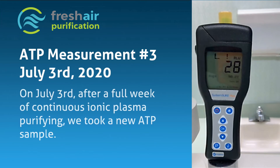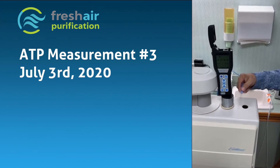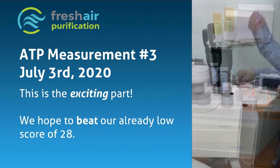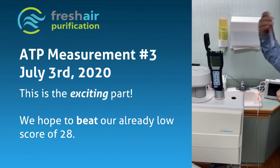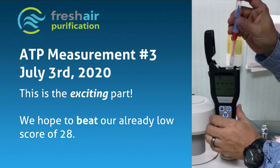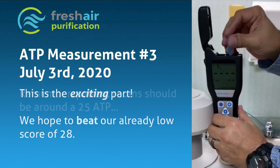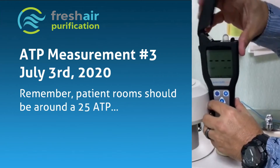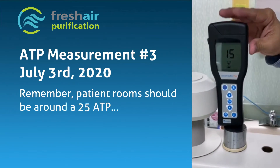ATP Measurement 3. On July 3, 2020, after a full week of continuous ionic plasma purifying, we took a new ATP sample. This is the exciting part — we hope to beat our already low score of 28. Remember, patient rooms should be 25.